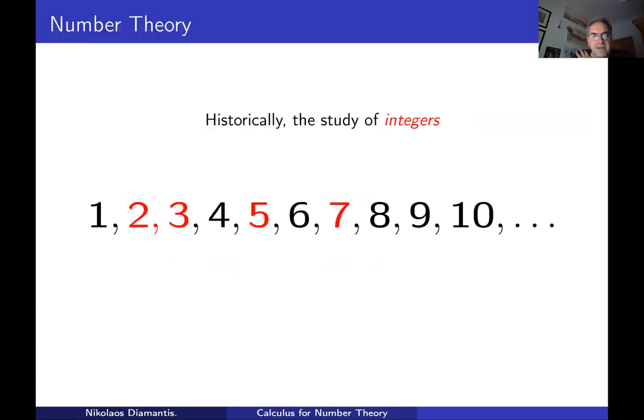Number theory is historically the study of integers. I say historically because ever since people tried using different techniques to solve number theory problems, some of those techniques have become part of number theory, and nowadays one might think that the original problems are a bit in the background. So, as I said, historically it is the study of integers, meaning numbers 1, 2, 3, 4, 5, 6, 7, etc.